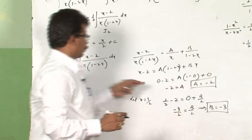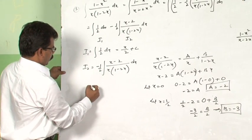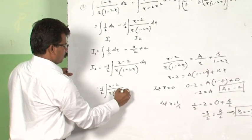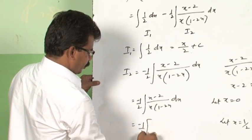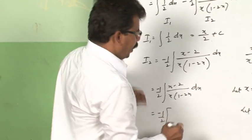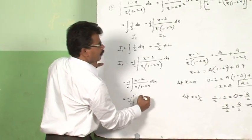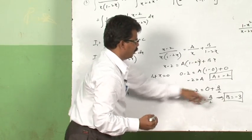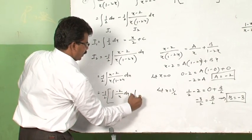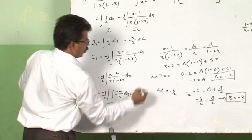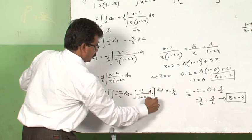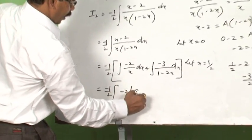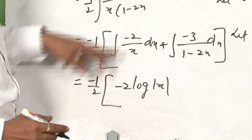Now we got the values of A and B. We will substitute in the given function. That is equal to minus 1/2 integral of x minus 2 divided by x(1 minus 2x) dx. This can be written as minus 1/2, keeping outside, and this can be written as A/x. The value of A is minus 2, so integral of minus 2/x dx plus integral of minus 3/(1 minus 2x) dx. Integration of 1/x is log|x|, so we can write minus 2 log|x|.